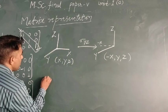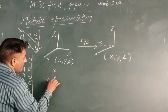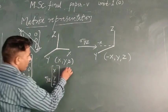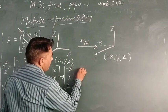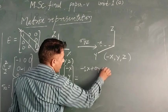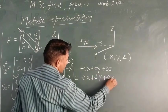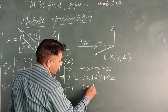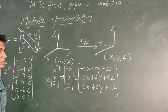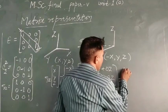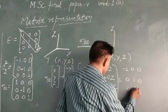To obtain the matrix form, we write: σ(yz) operation on x, y, z gives minus x, y, z. Writing this as: (−1)x + 0·y + 0·z; 0·x + 1·y + 0·z; 0·x + 0·y + 1·z. The resulting matrix for σ(yz) is: [−1, 0, 0 / 0, 1, 0 / 0, 0, 1].